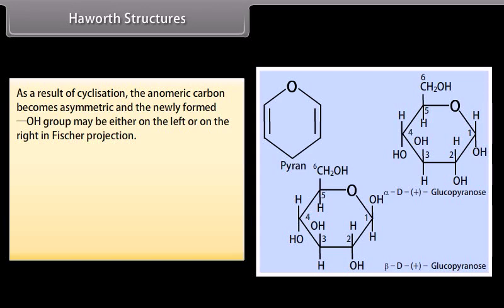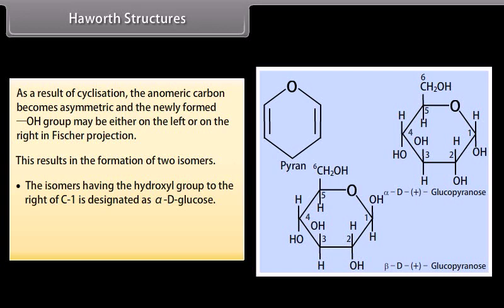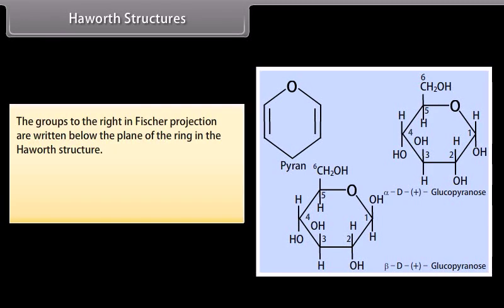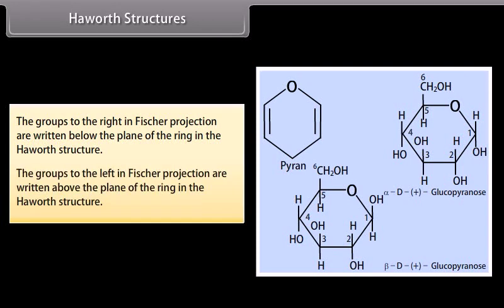Haworth structures: As a result of cyclization, the anomeric carbon becomes asymmetric and the newly formed OH group may be either on the left or on the right in Fischer projection. The isomer having the hydroxyl group to the right of C1 is designated as alpha-D-glucose, and the isomer having the hydroxyl group to the left of C1 is designated as beta-D-glucose. The lower thickened edge of the ring in the Haworth structure is nearest to the observer. Groups to the right in Fischer projection are written below the plane of the ring, and groups to the left are written above the plane.